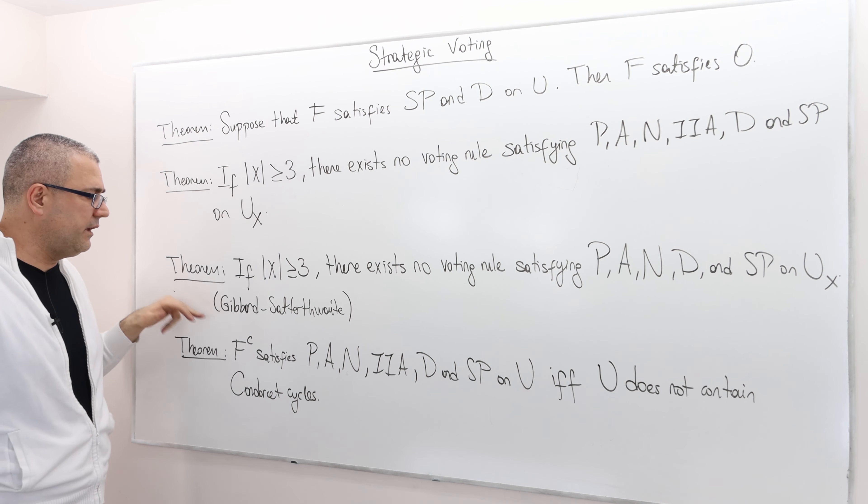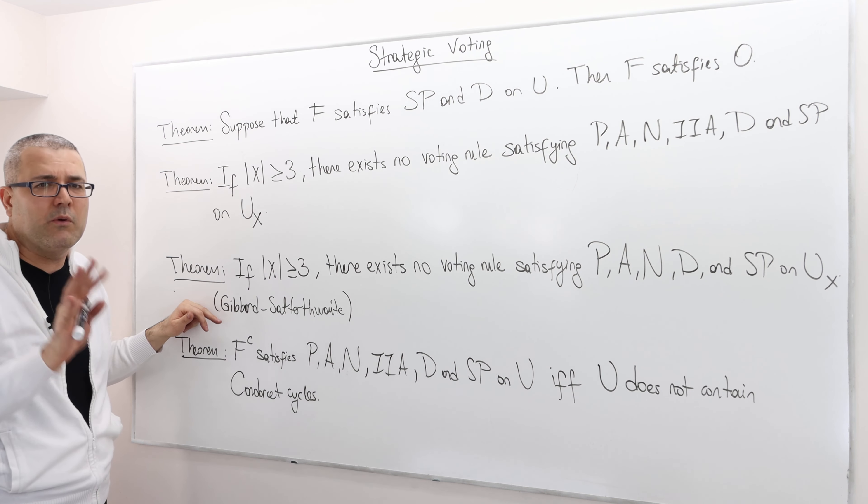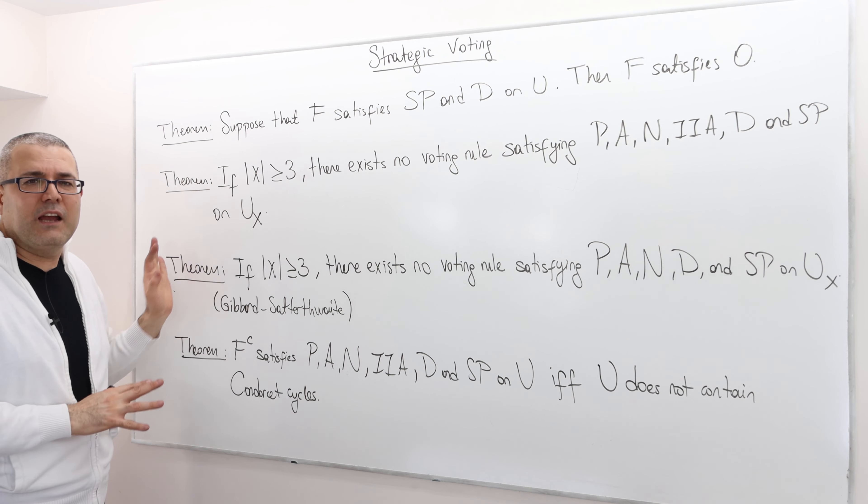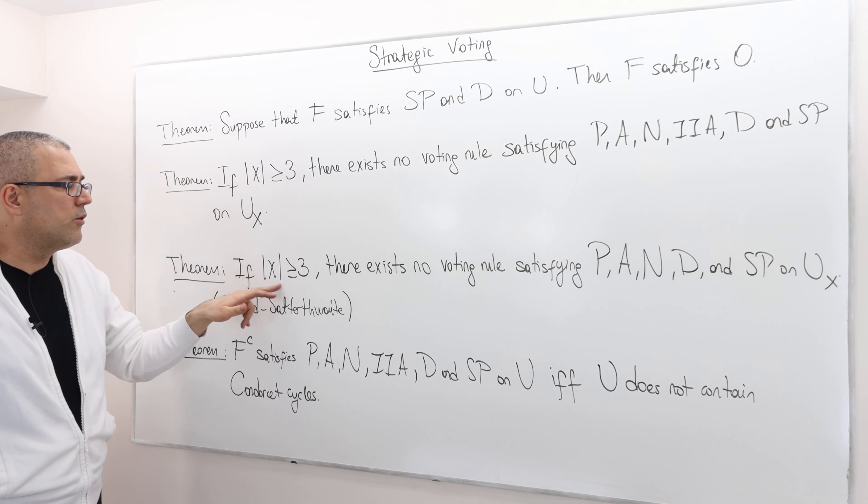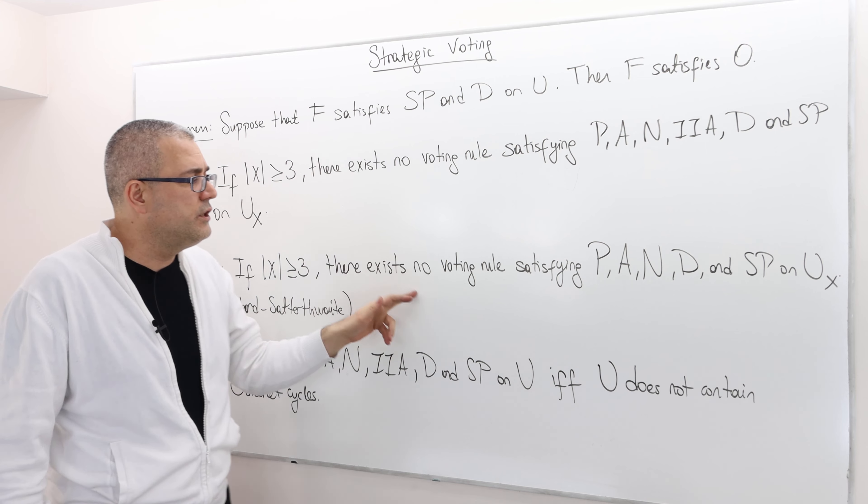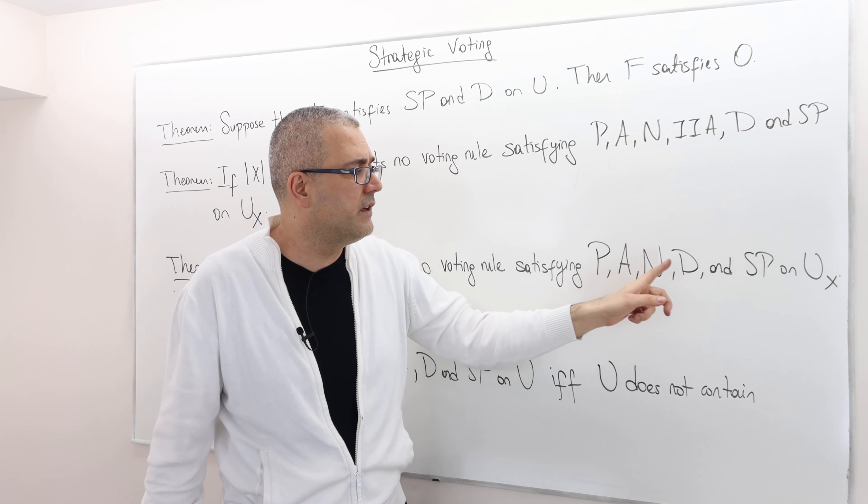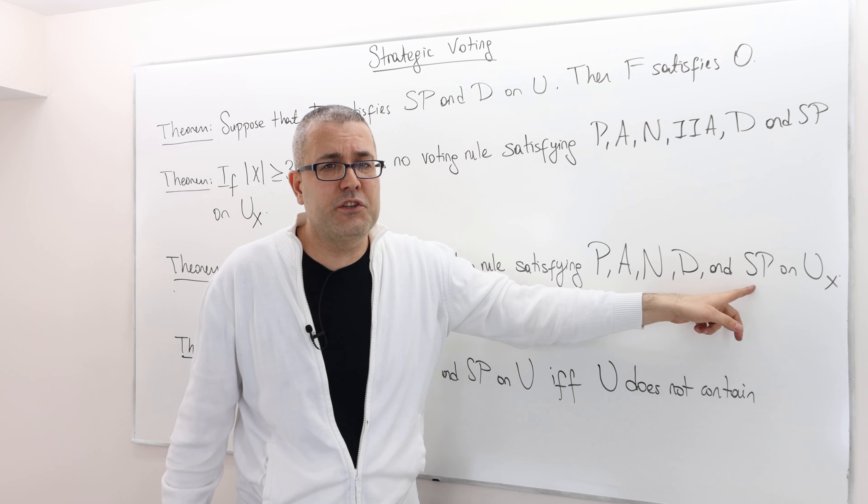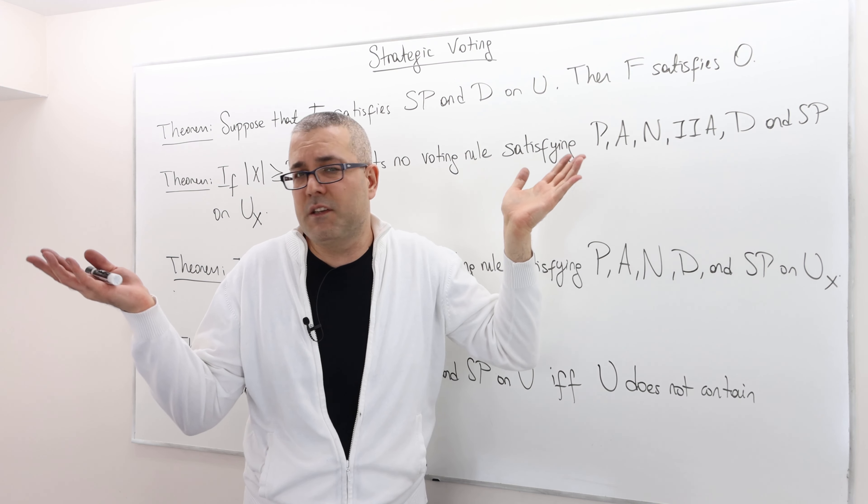Well another impossibility theorem also known as, well this is a different version of Gibbard-Satterthwaite theorem by the way, but this is a kind of a direct implication of Gibbard-Satterthwaite theorem and so I call it as Gibbard-Satterthwaite Impossibility theorem. It says the following, if we have at least three alternatives or candidates, well then there exists no voting rule which satisfies Pareto principle, anonymity, neutrality, decisiveness and strategy proofness on the full unrestricted domain of preferences. It's impossible.